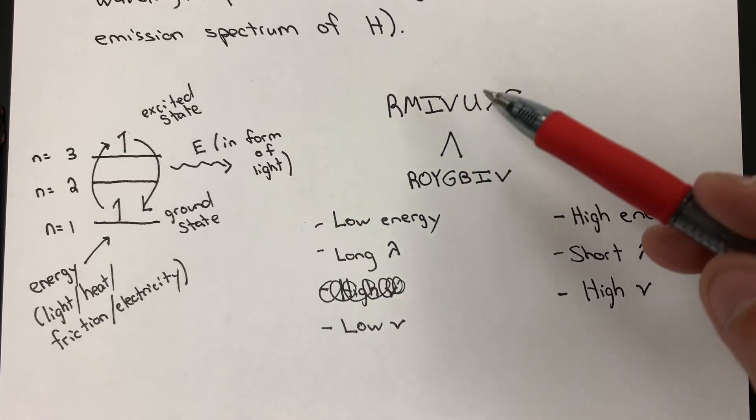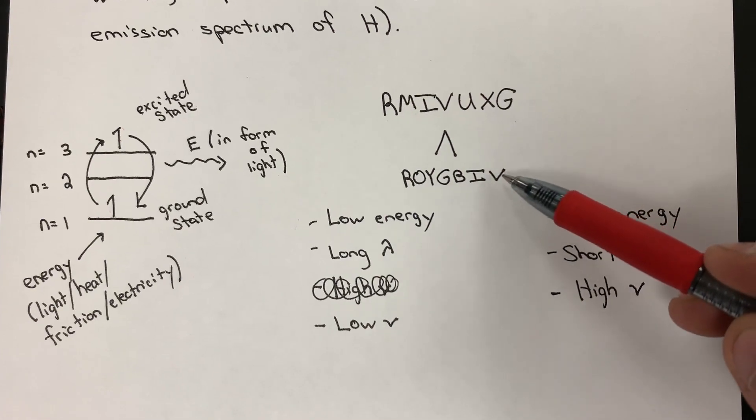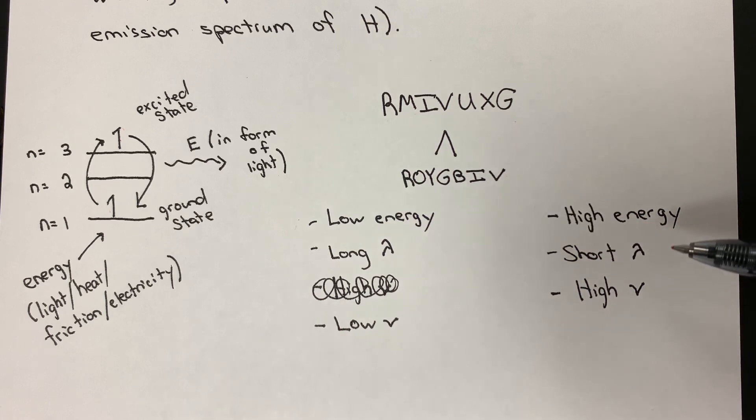On the other side of our spectrum, up towards gamma, we're backtracking if we were more on the violet side of our visible region there. We're talking about high energy waves - really short wavelength, and because the wavelength is so short, we're talking about that wave's ability to repeat itself as having a really high frequency.